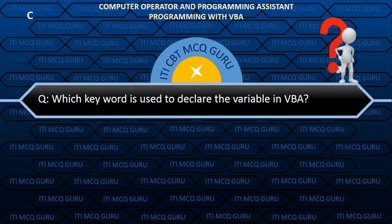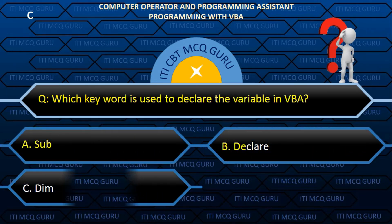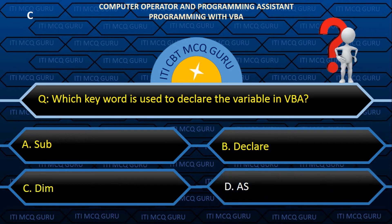Which keyword is used to declare a variable in VBA? Answer: C. Dim.